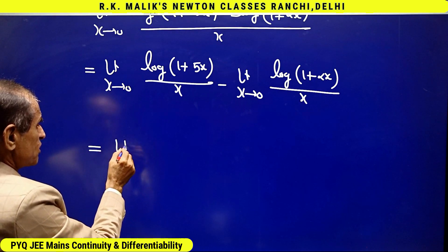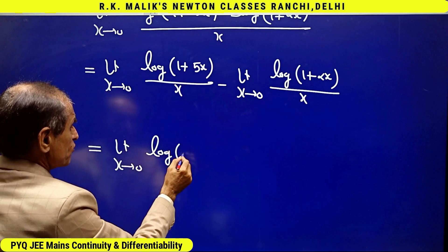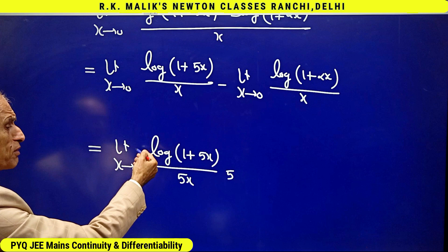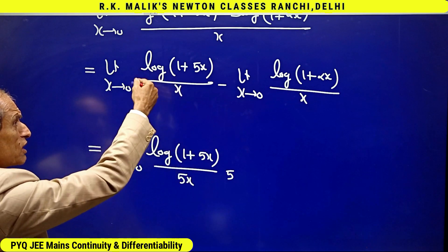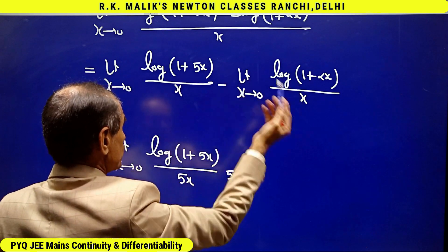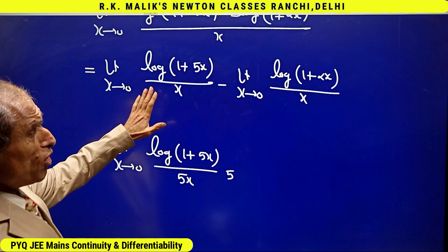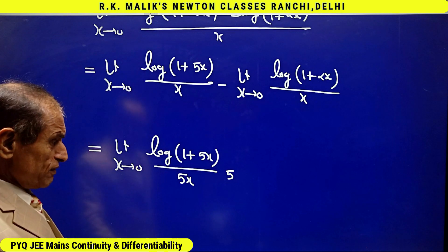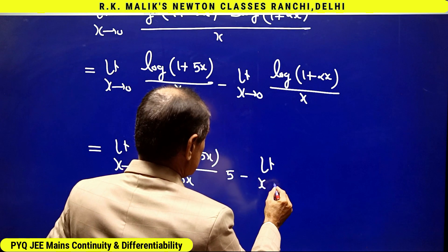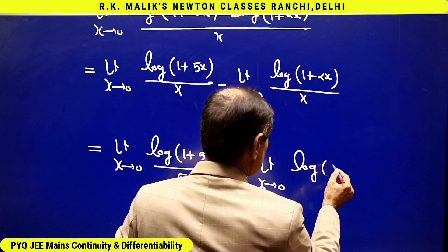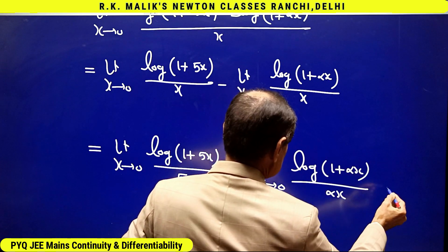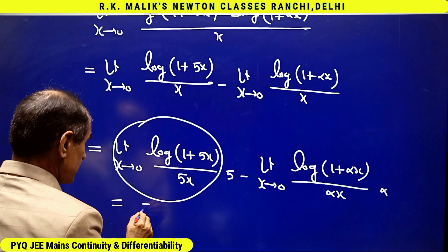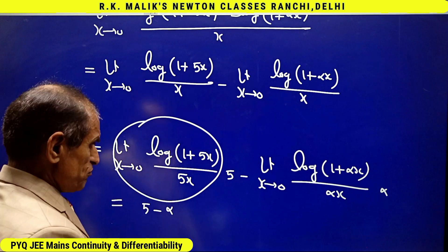So the expression becomes: limit as x tends to 0 of [log(1 + 5x) / (5x)] × 5, minus limit as x tends to 0 of [log(1 + αx) / (αx)] × α. I know the limit of each part is a finite number, which justifies the separation. Since limit as x tends to 0 of log(1 + t) / t = 1, each bracketed limit evaluates to 1, giving us 5 − α.